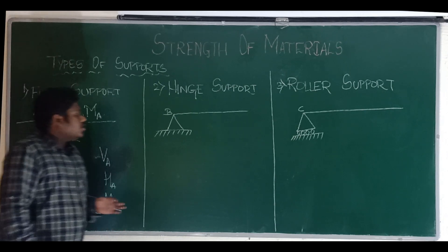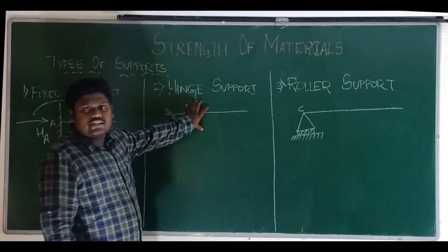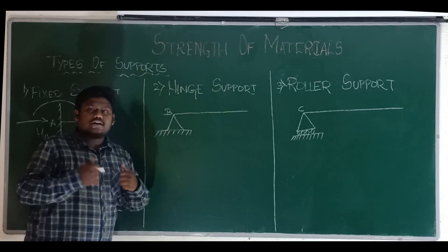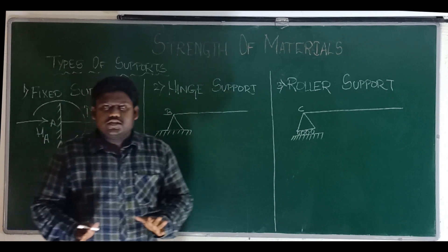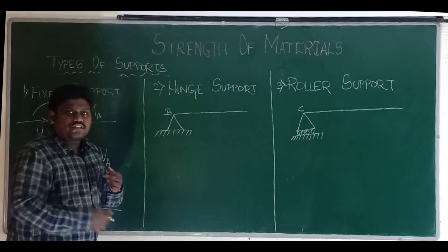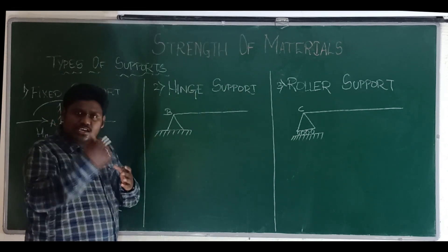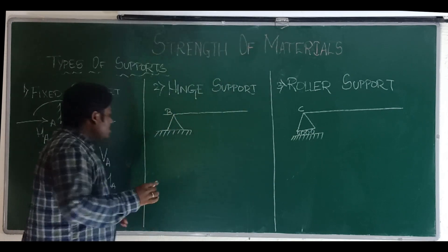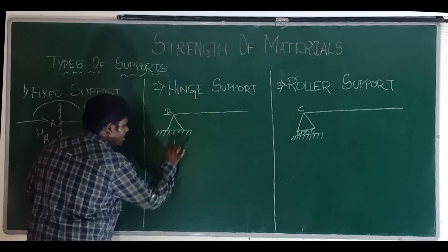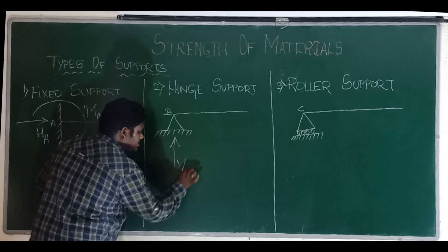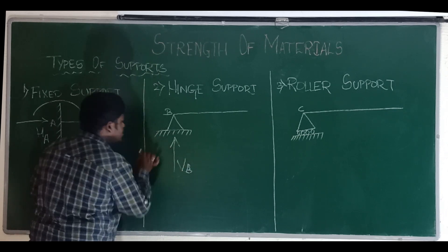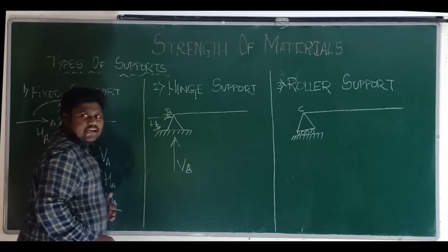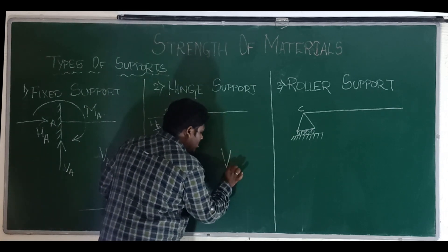The second type is the hinge support. Hinge support allows rotation of the support but not translation. This means that you have two developed reactions — a horizontal reaction and a vertical reaction. So we will be having two reactions for any hinge support.